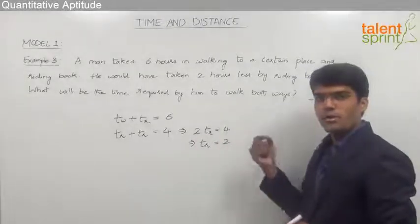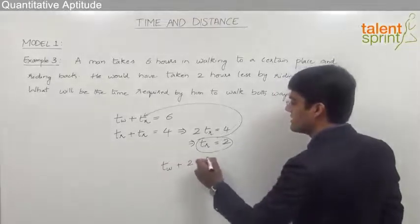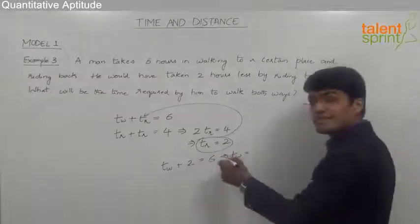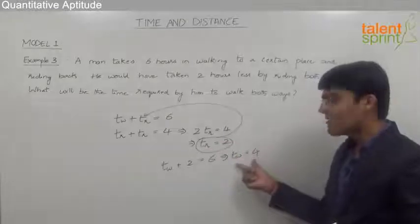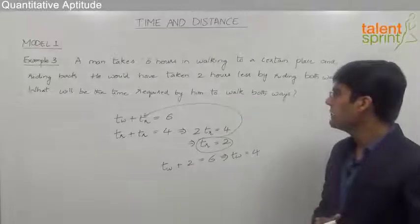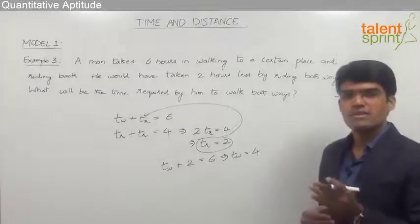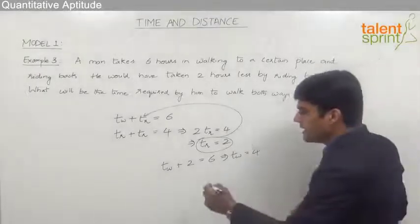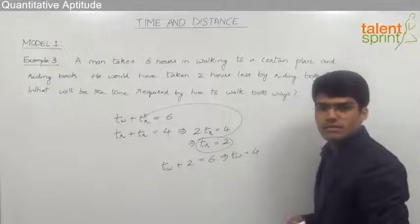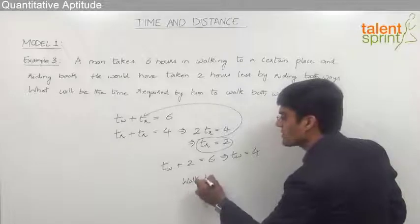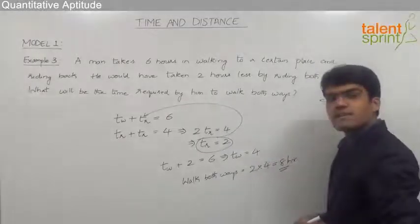Substituting the riding time of 2 hours into the first equation: time to walk + 2 = 6, so time to walk one side = 4 hours. Since the question asks for time to walk both ways, we double this: 2 × 4 = 8 hours. The answer is 8 hours.